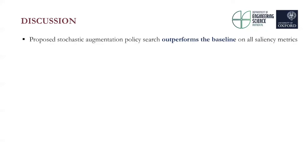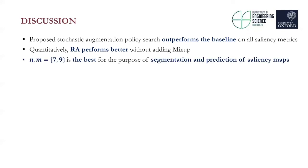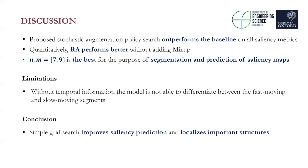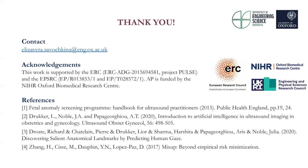To summarize, the proposed stochastic augmentation policy search outperforms the baseline on all saliency metrics. Quantitatively, RandAug performs better without adding mix-up; with high augmentation values, the image becomes too distorted when used with mixed example augmentation, as KLD is the only metric measuring the difference between two probability distributions. RandAug with n=7 and m=9 is the best combination for our purposes. A limitation is that the model can receive two very similar frames with different gaze point locations, and without temporal information it cannot differentiate between fast-moving and slow-moving segments. In conclusion, a simple grid search can improve saliency prediction and help localize structures important for clinical measurement, with automation of clinical measurement as future work.